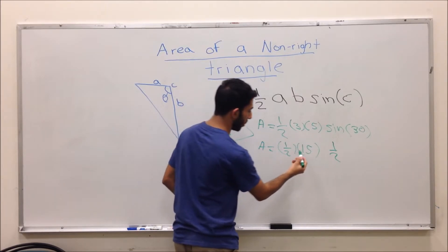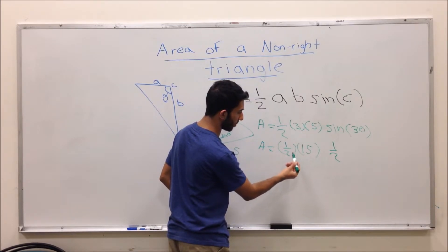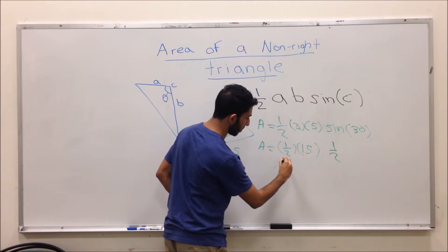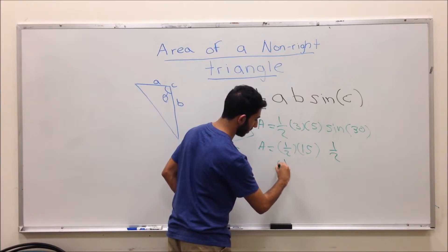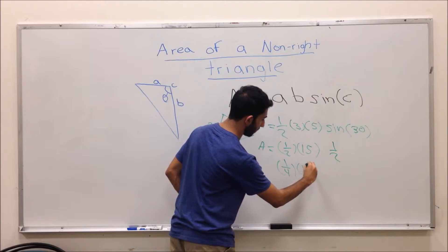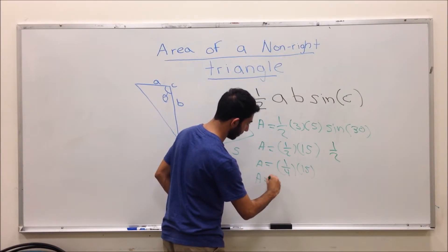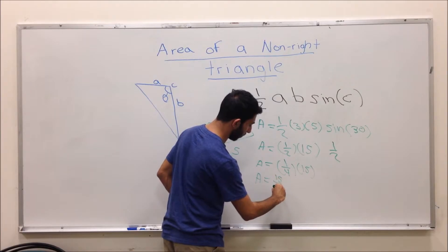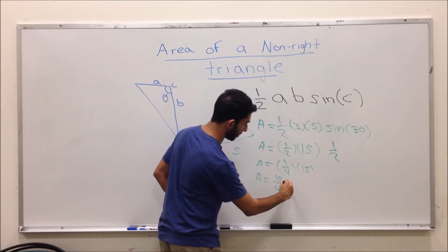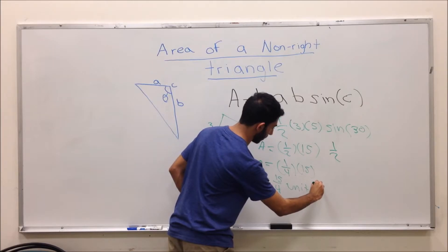So here, you obviously cannot multiply 15 and one-half. So you do one-half times one-half, which gives you one-fourth times 15. And your answer then simply is area equals 15 over 4 units squared.